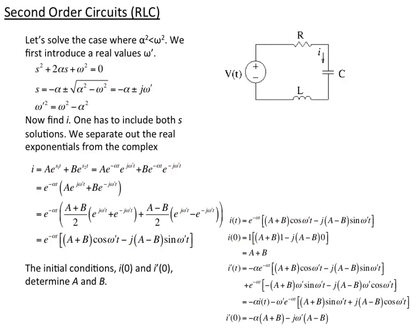Then we plug in i'. We take the derivative of our solution, go through all the calculation, and plug in t=0 again, which selects out the relevant terms. Since we've already determined a+b, this second condition determines what a−b is.